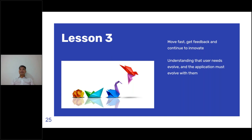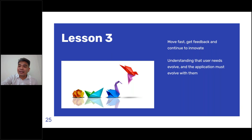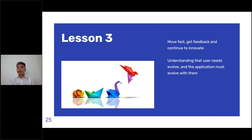Lesson number three: move fast, get feedback, and continue to innovate. Sometimes you can brainstorm as much as you want, but if the solution doesn't solve a real problem for the user, it's not going to move the needle. Be clear about understanding user needs as they evolve — your application must evolve with them. The only way to do that is to constantly get feedback so you can continue to innovate.